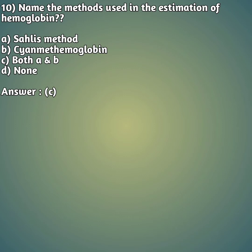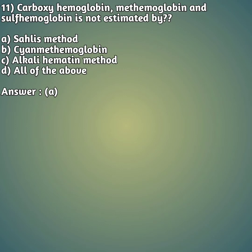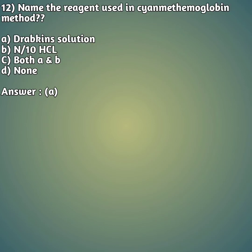Eleventh question: carboxyhemoglobin, methemoglobin, and sulfhemoglobin are not estimated by — option A: Sahli's method, option B: cyanomethemoglobin method, option C: alkali hematin method, option D: all of the above. The right answer is option A — Sahli's method. These variants are not estimated by Sahli's method, which is only used for standard hemoglobin estimation.